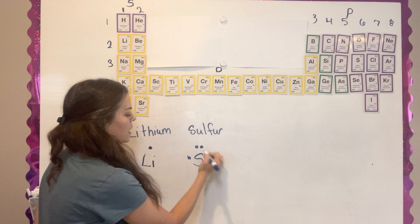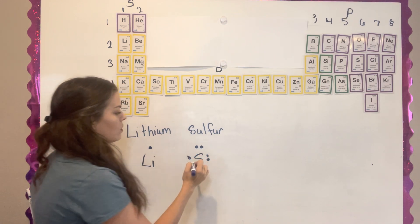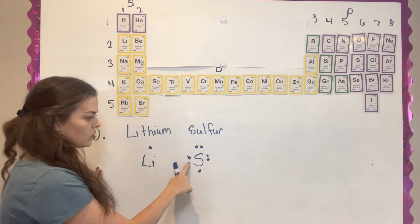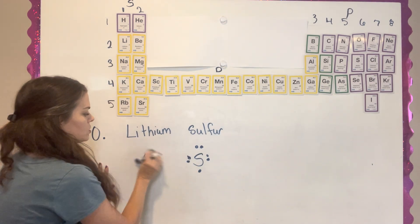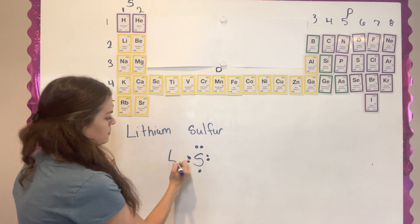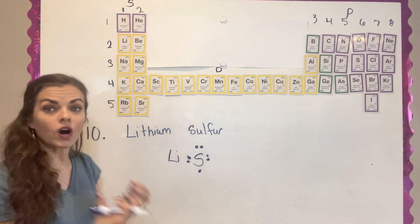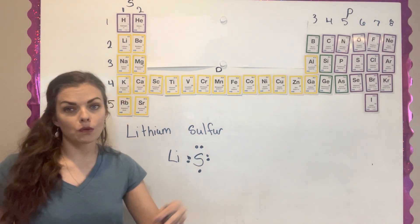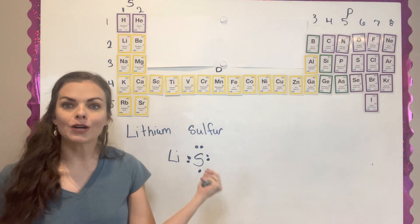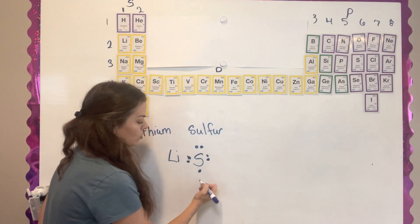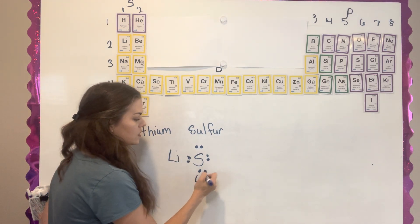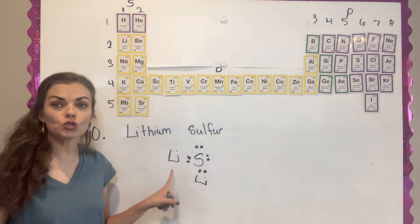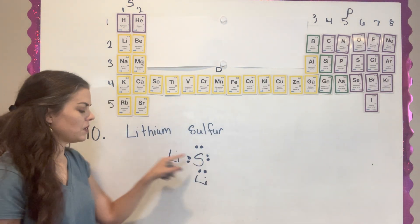Lithium is going to give its electron to the sulfur. I'll redraw it and scoot it over because sulfur is wanting it. But sulfur still has one open spot. In theory, if you've mixed lithium and sulfur in a beaker, another lithium will come up and give its electron to this sulfur. So it would take two lithiums to make this sulfur happy.